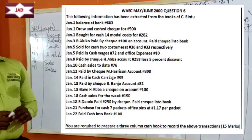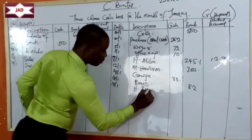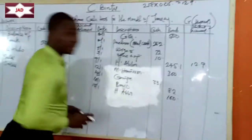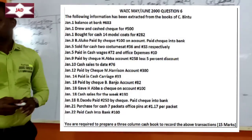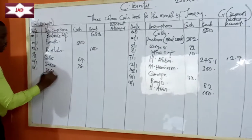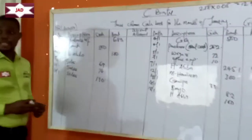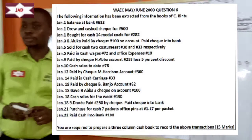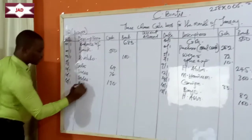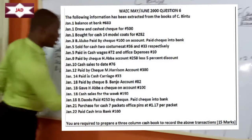Also January 18th, gave H. Abba a check on account 100 Naira — another payment by check, recorded in the bank column for 100 Naira. Also January 18th, cash sales for the week: 190 Naira — money coming in, recorded in the cash column as sales for 190 Naira. Also January 18th, B. Daudu paid 250 Naira by check into bank — money coming in, recorded in the bank column for 250 Naira.